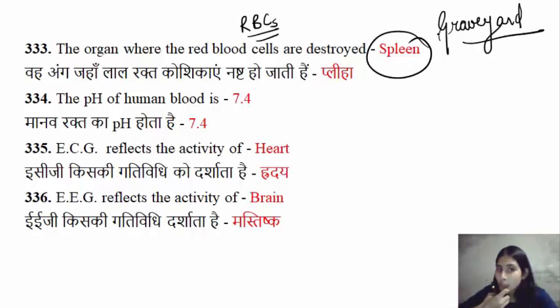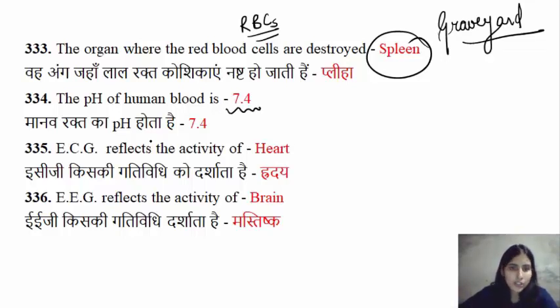Next, how much is the pH of human blood? It is almost 7.4 on average.